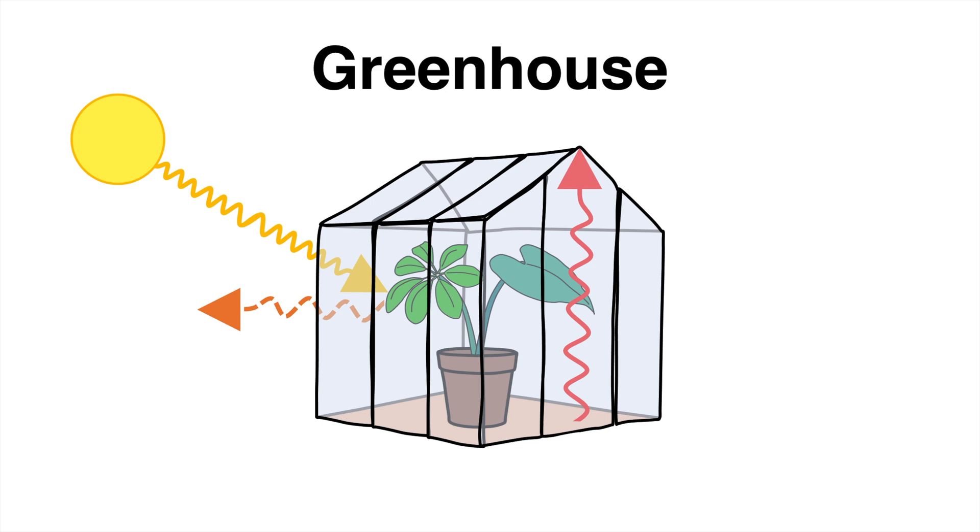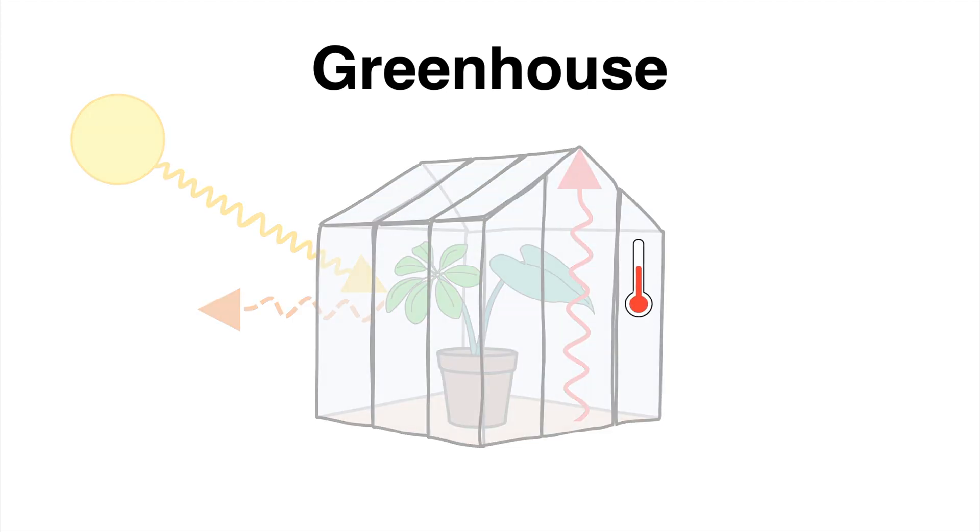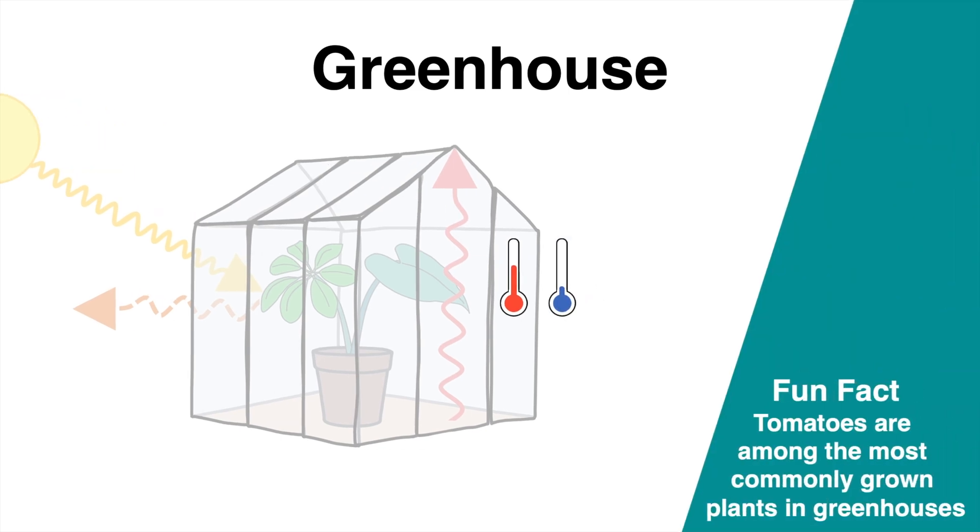Therefore, the temperature inside the greenhouse increases even if the outside temperature is much lower. However, this technique allows us to grow crops, exotic fruits and various vegetables, which are valuable food sources for us.